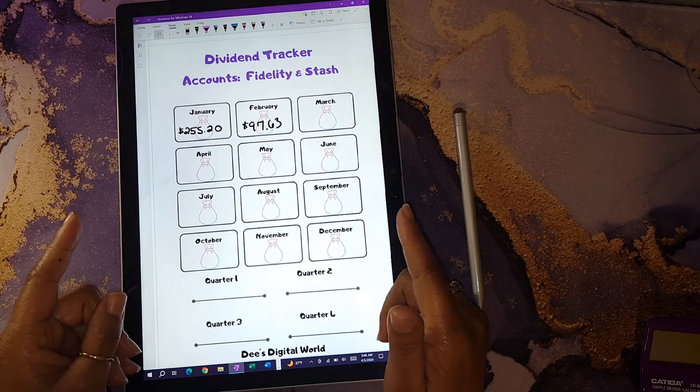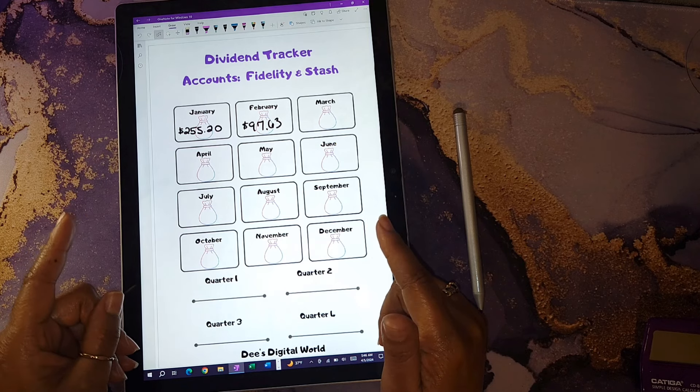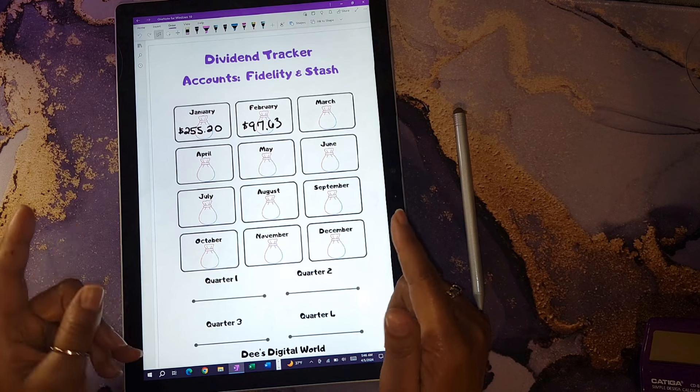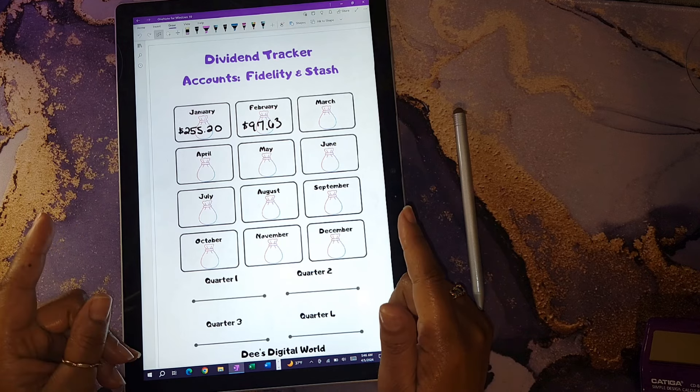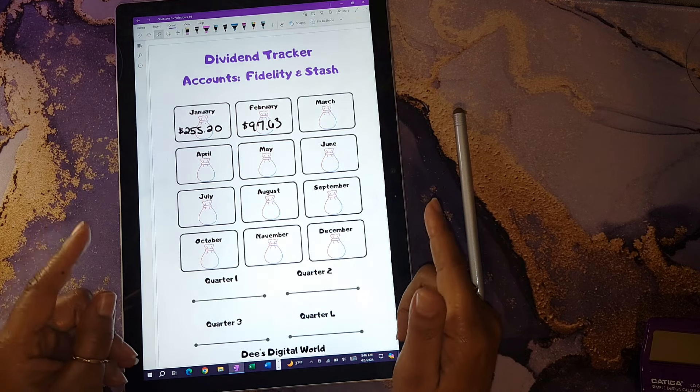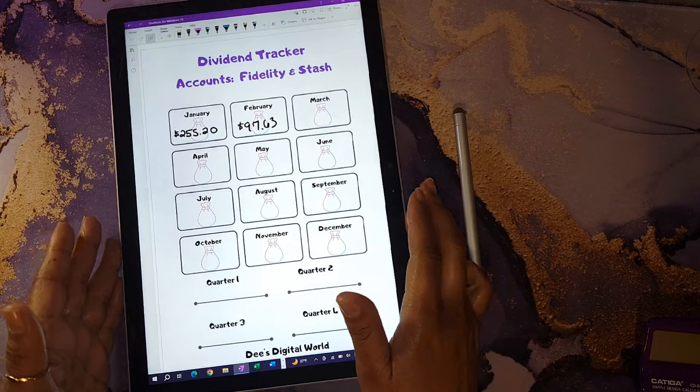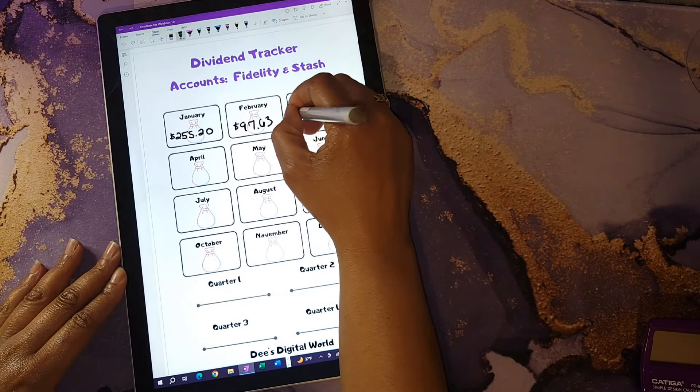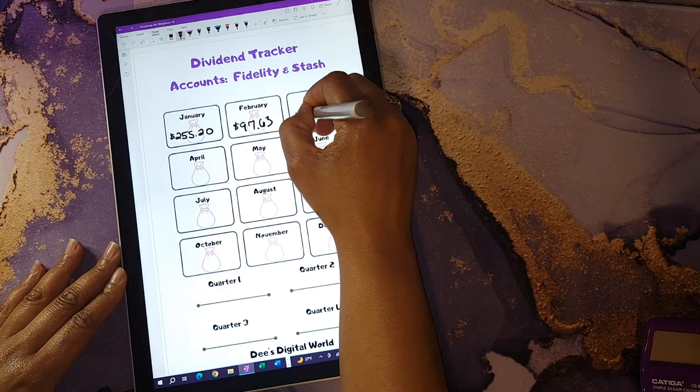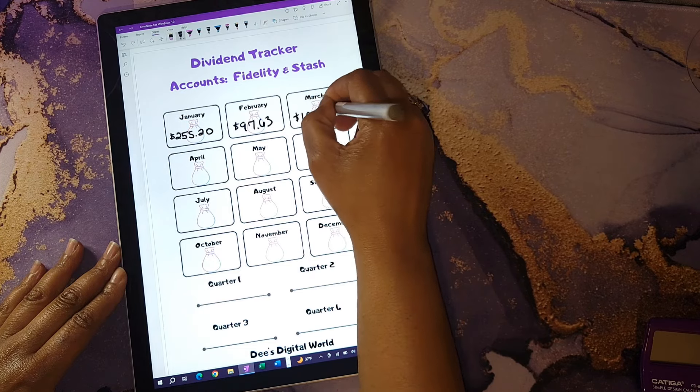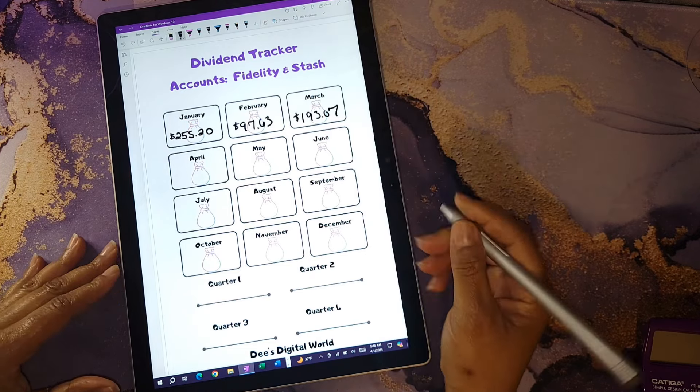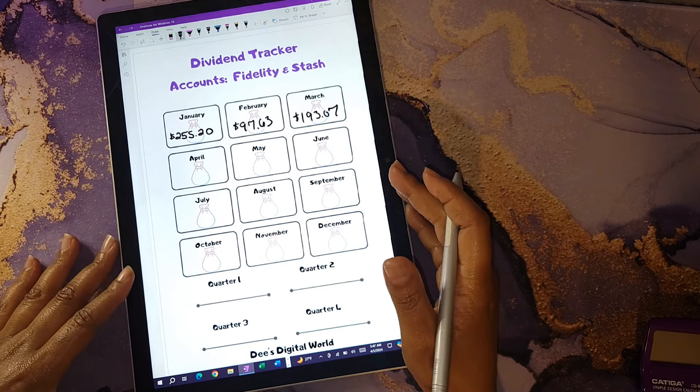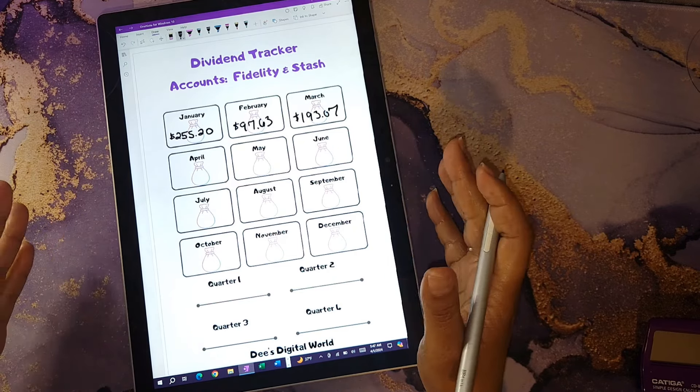That's because I'm trying to build up my HSA cash balance so I can use that to help me pay for medical bills this year instead of using the money from my budget or from my savings account. For the month of March, I was able to bring in a total of $193.07.